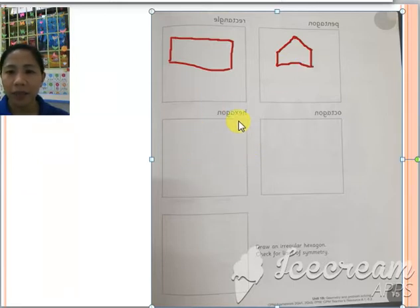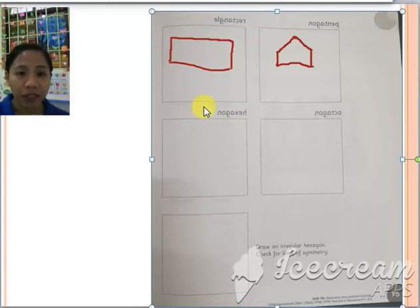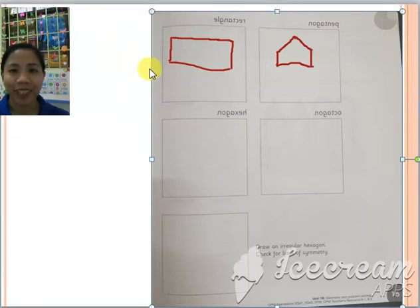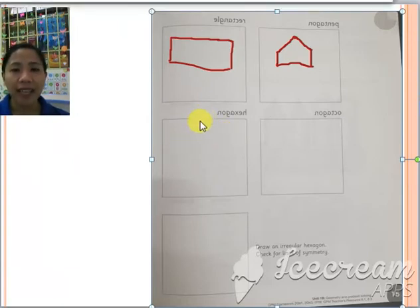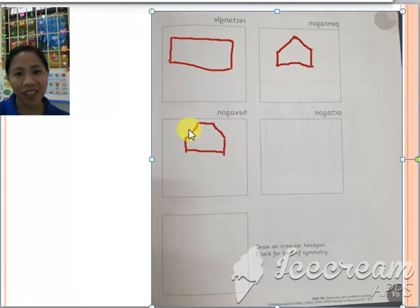Next is hexagon. Okay, can you read that one? It's hexagon. Hexagon. How many sides? Hexagon has six sides. So let's draw hexagon, six sides. One, two, three, four, five, and six. There. So one, two, three, four, five, and six.